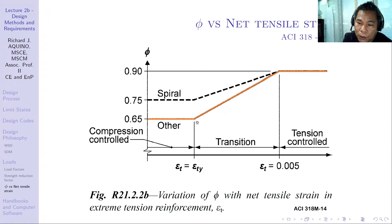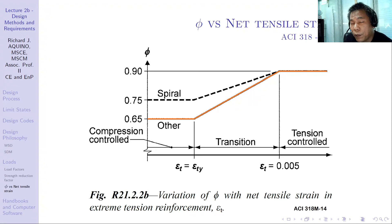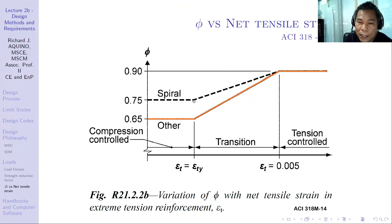In between compression-controlled and tension-controlled is the transition section. You can draw a straight line from phi of 0.65 to phi of 0.9. For εt between εty and 0.005, you can compute the corresponding phi by ratio and proportion. This applies to columns with lateral ties; if spiral ties are used, the compression-controlled phi is 0.75, but the tension-controlled phi remains 0.9.